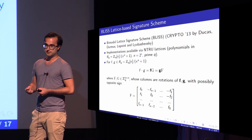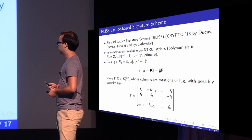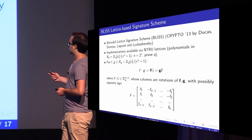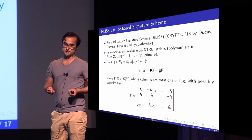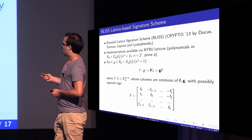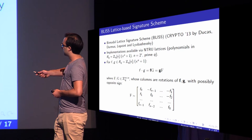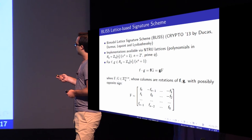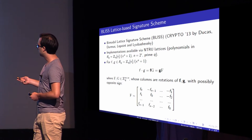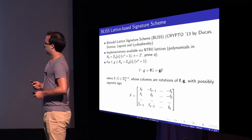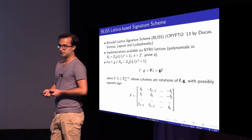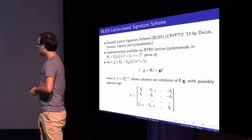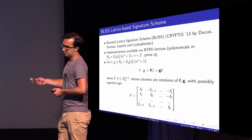If you want to add two polynomials, it's basically just adding the coefficients. But if you want to multiply polynomials, you typically get a polynomial with a higher degree, so you also have to reduce by this polynomial. You can do this via, for instance, the number theoretic transform. But for this attack, it's easier to think about it as vector-matrix multiplication. The bold letters F and G are the coefficient vectors of the polynomials, and the capital F and G are matrices whose columns are the rotations of these coefficient vectors, getting an opposite sign because of the plus 1. So multiplying polynomials is just a vector-matrix multiplication.